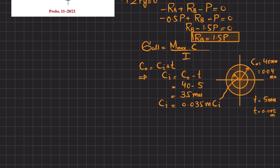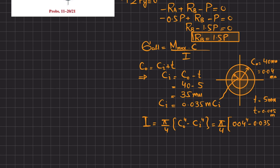The moment of inertia for a hollow circular cross-section is I = (π/4)(C_outer⁴ − C_inner⁴). Substituting: I = (π/4)(0.04⁴ − 0.035⁴), which gives I = 0.8320 × 10⁻⁶ m⁴.